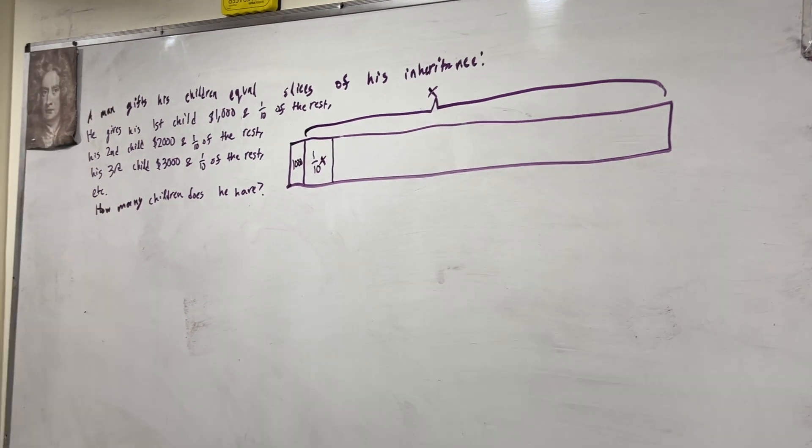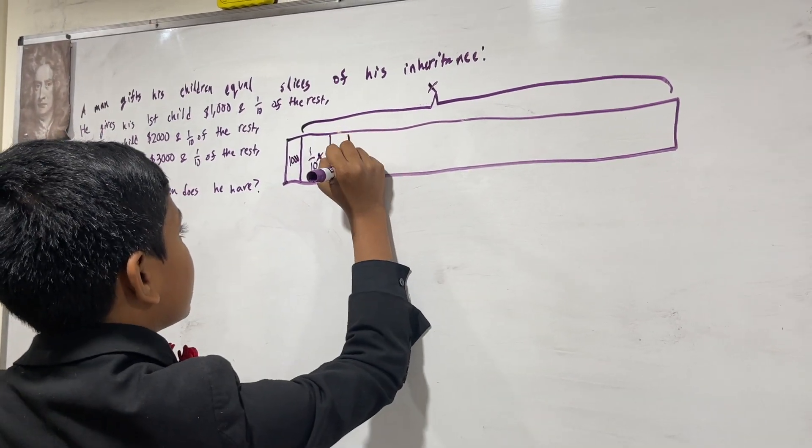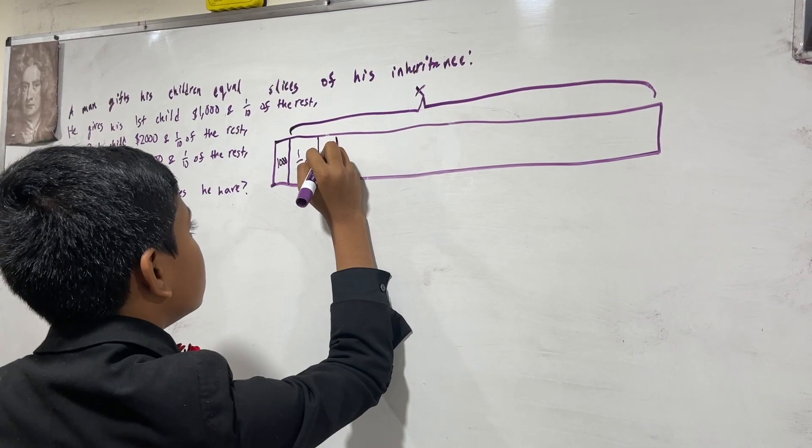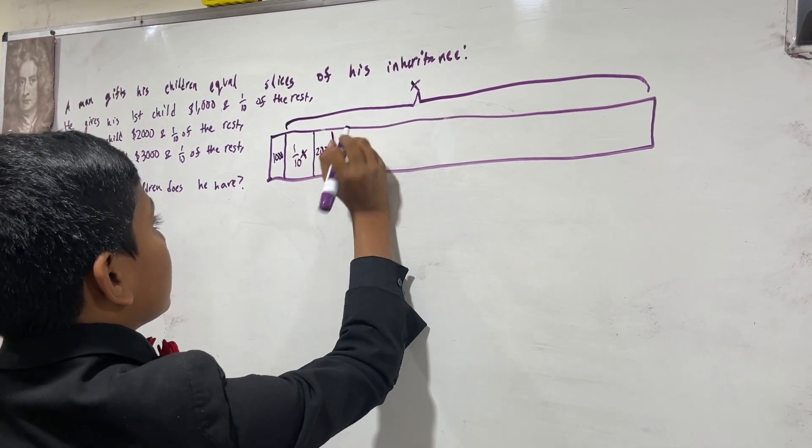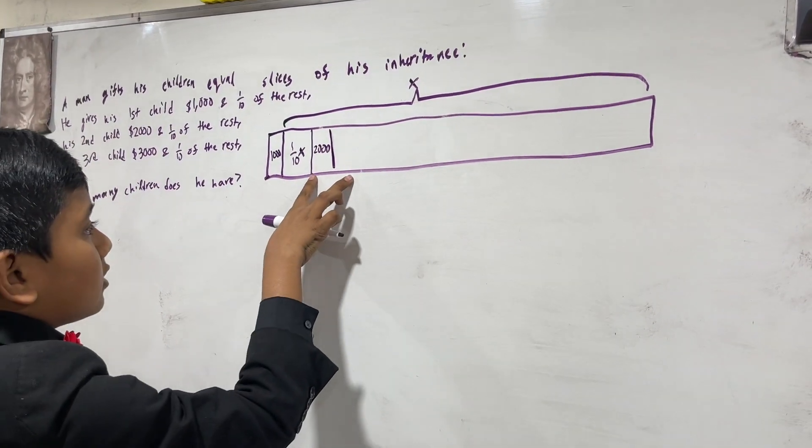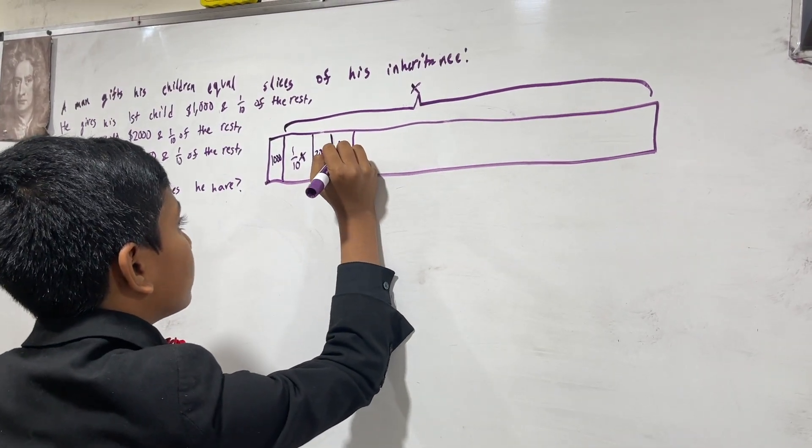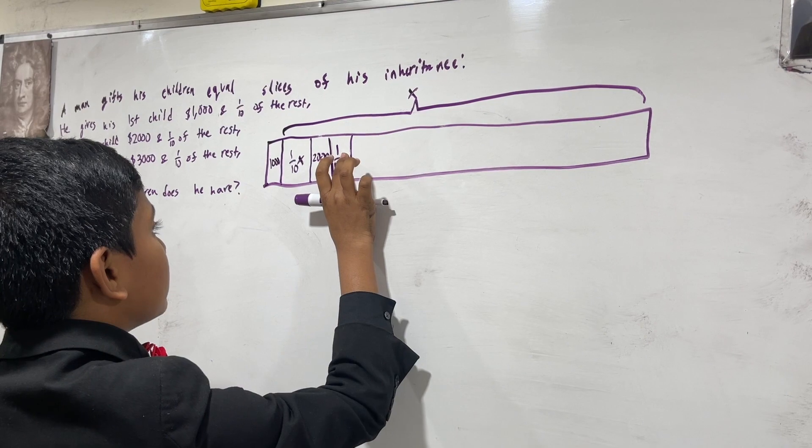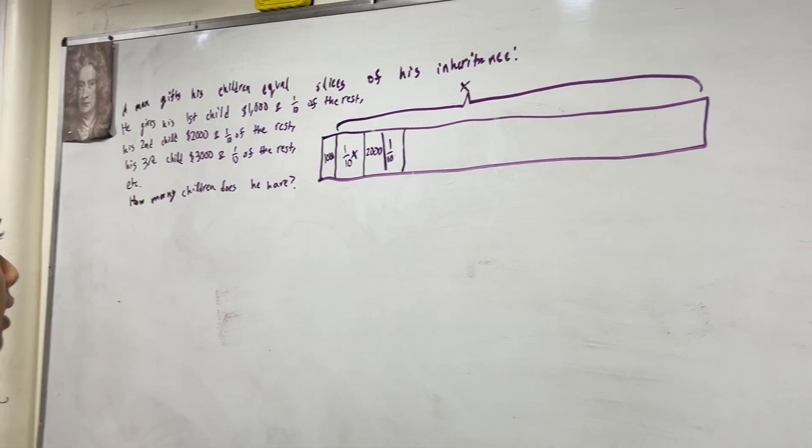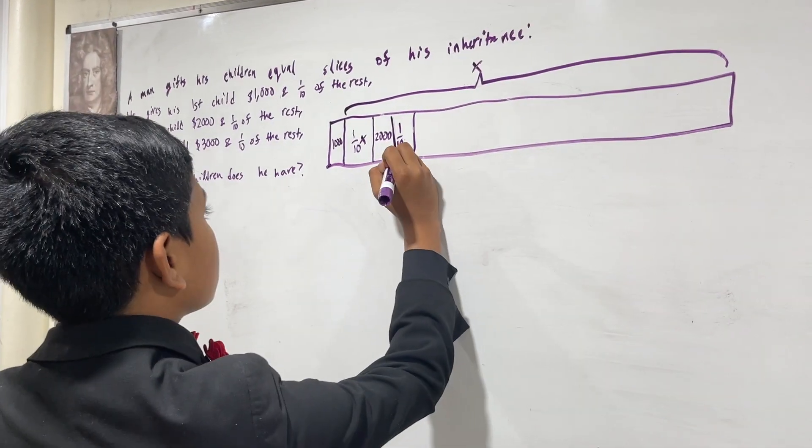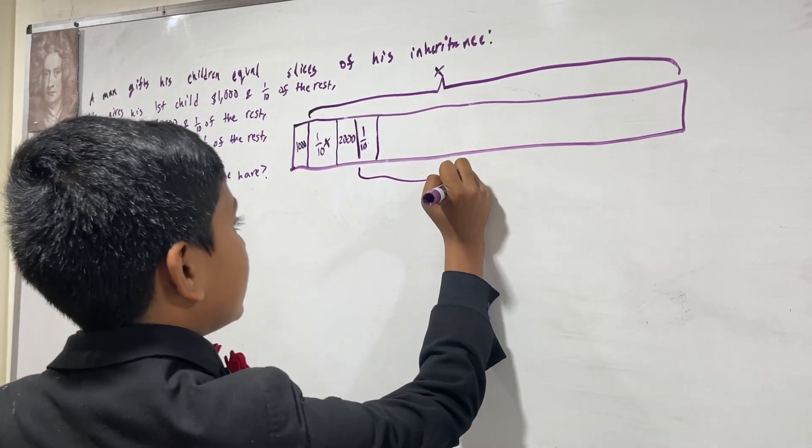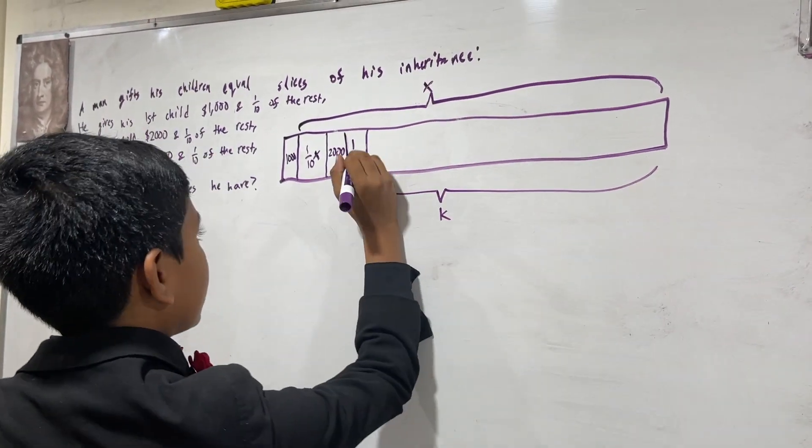So, now he gives his second child two thousand dollars, and then, let me just see, one tenth of what is left. Now, it's not going to be X this time, but rather something like this, K, let's call it.